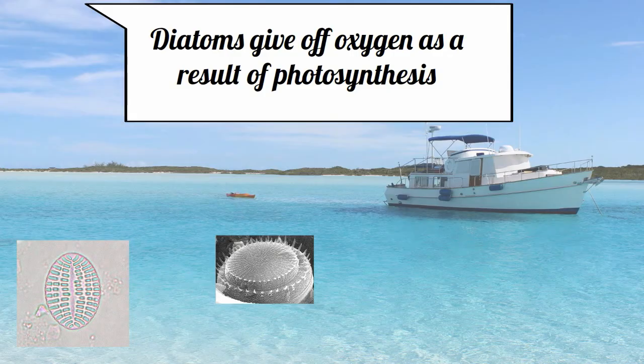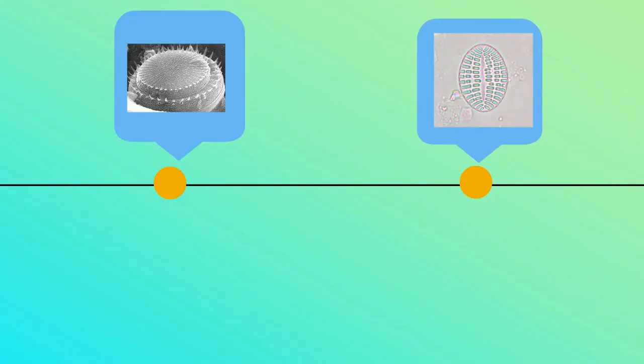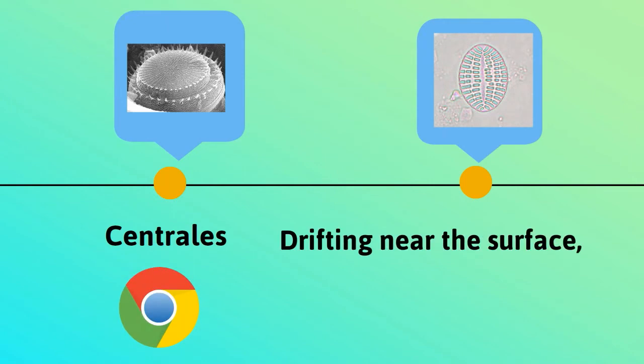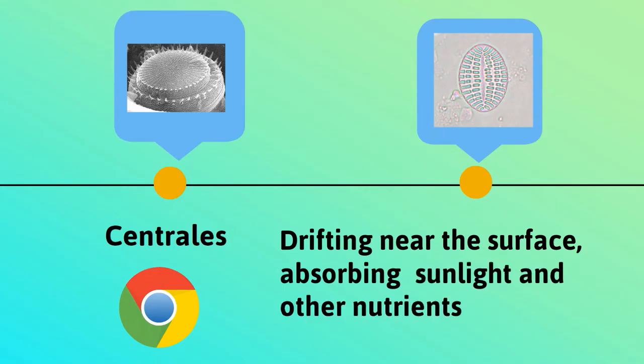There are two basic forms of diatoms. The first, centrals, have radial symmetry. They are found in the ocean and are wheel-shaped. They can be found drifting near the surface, absorbing sunlight and other nutrients.